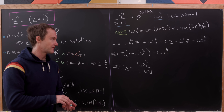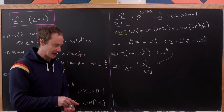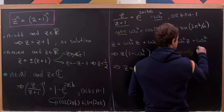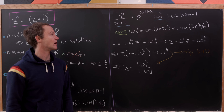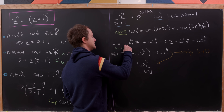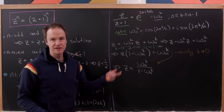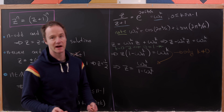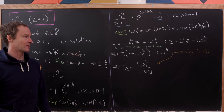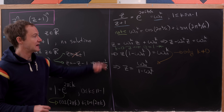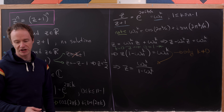This last division by one minus omega sub n to the k is only possible when k is not equal to zero. If k equals zero, we divided by zero — that's equivalent to saying zero equals one, which clearly doesn't make sense. So our solutions are not valid for all k between 0 and n minus 1; they are only valid for k between 1 and n minus 1. After editing that range, this first line is true for all those values of k and does lead to a solution in each case.